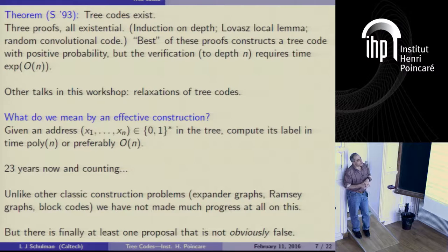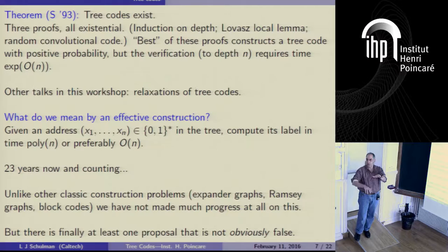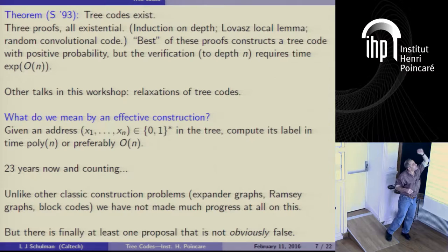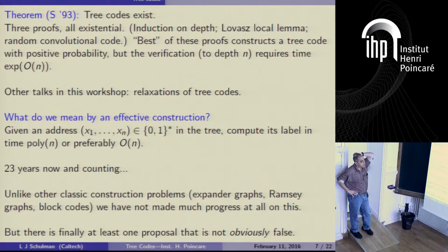That proof may be helpful regarding whether the infinite object is constructible — whether you can keep building and never have to go back. Since we don't have explicit constructions yet, that's still an interesting question. There's probably an argument that goes that way, but I've never worked it out. In some sense, the most efficient existence argument is just that a random convolutional code works with finite probability.